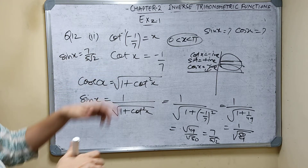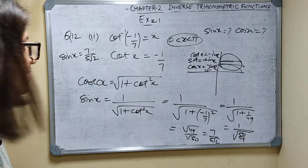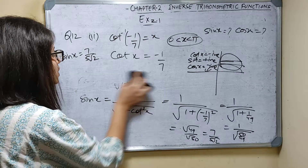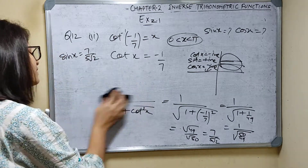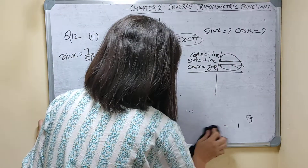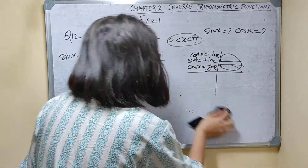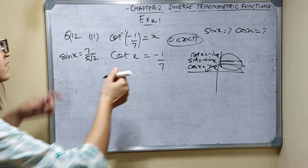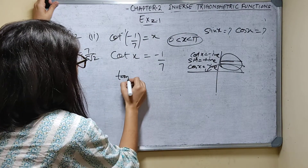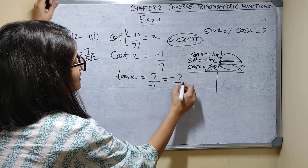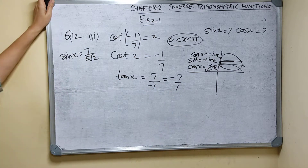Since cot x equals minus 1 by 7 and sin x equals 7 by 5 root 2, cos x will definitely be negative in the second quadrant. So tan x is 7 by minus 1 (i.e., minus 7 by 1), since cot x equals minus 1 by 7.